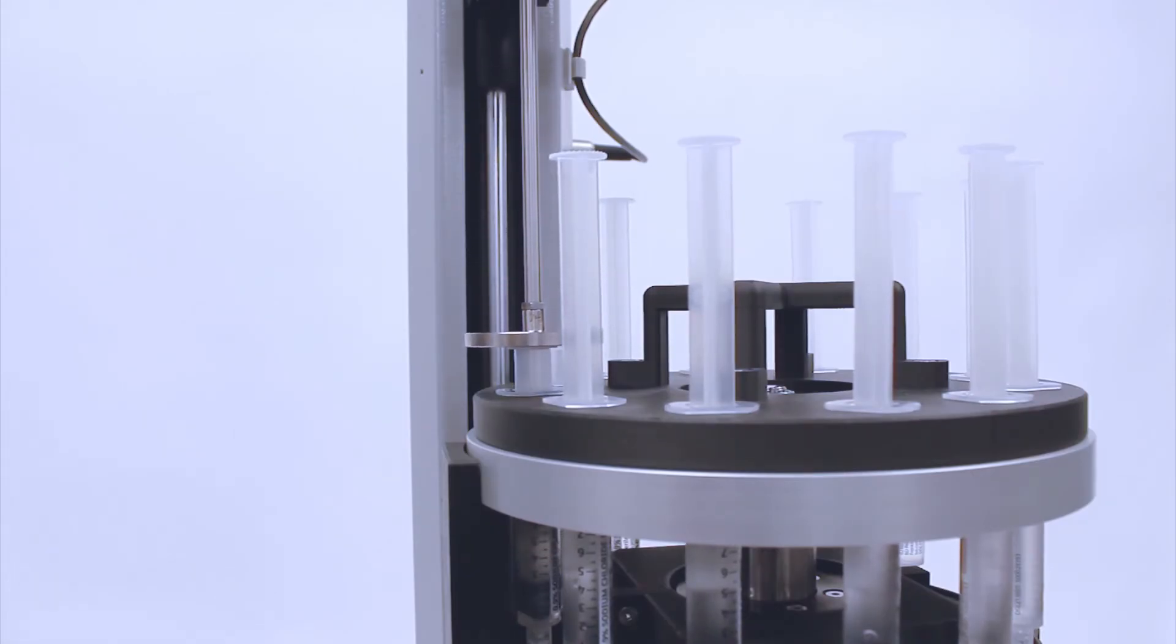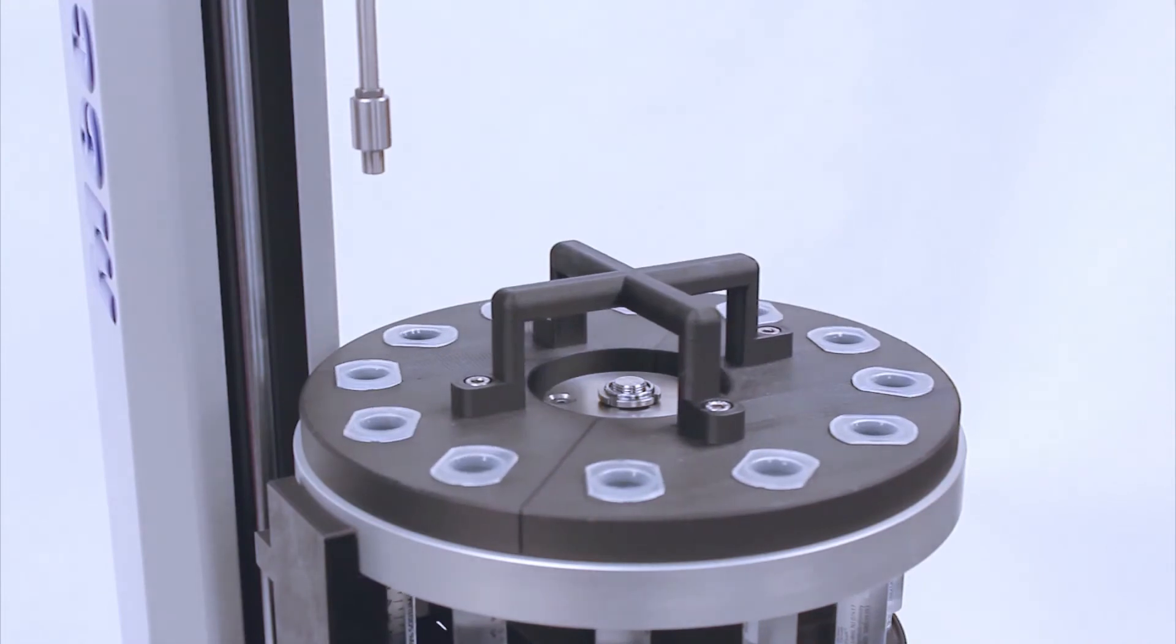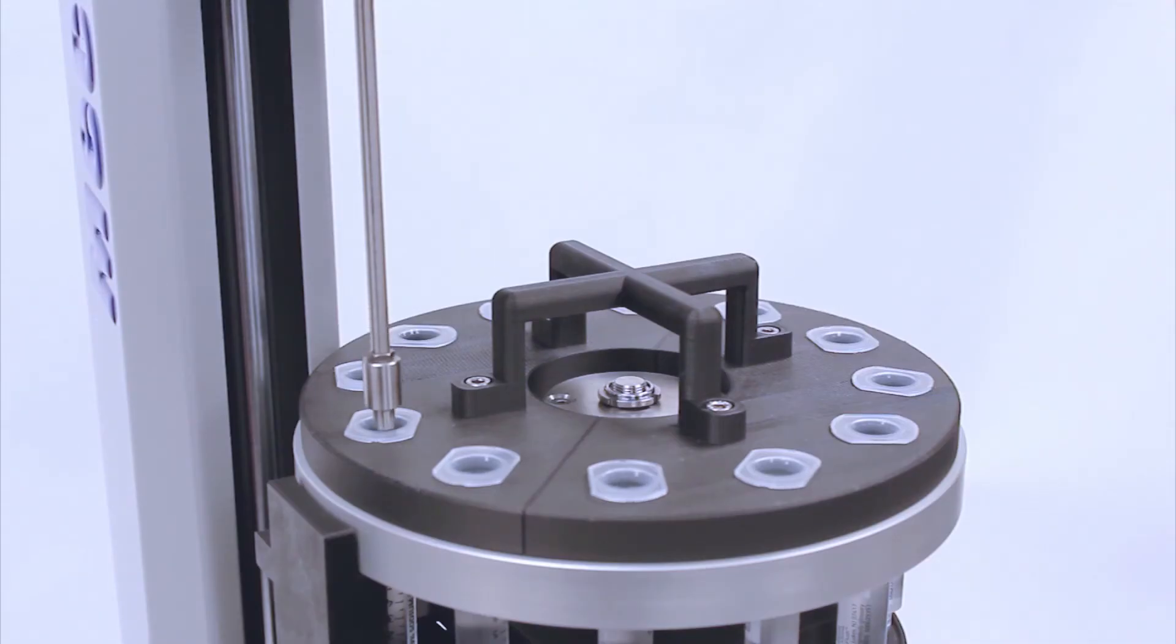Each stage of the test sequence is controlled by Mecmesin's Emperor software. It recognizes where the syringe is positioned and then indexes it to the correct spot.